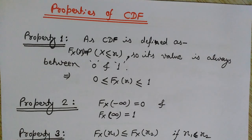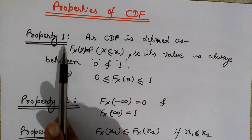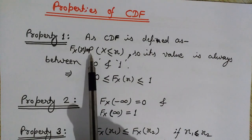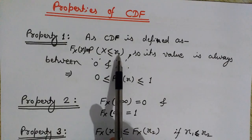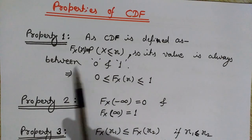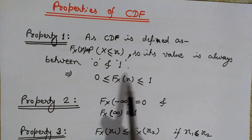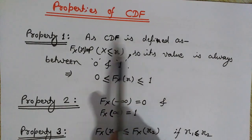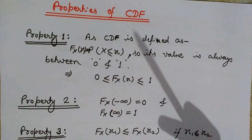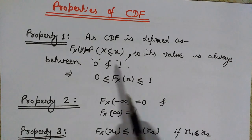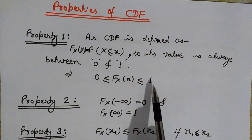Now let's look at the properties of the cumulative distribution function. Property one: since CDF is defined as a probability, its value is always between zero and one, because probability always has a value between zero and one.